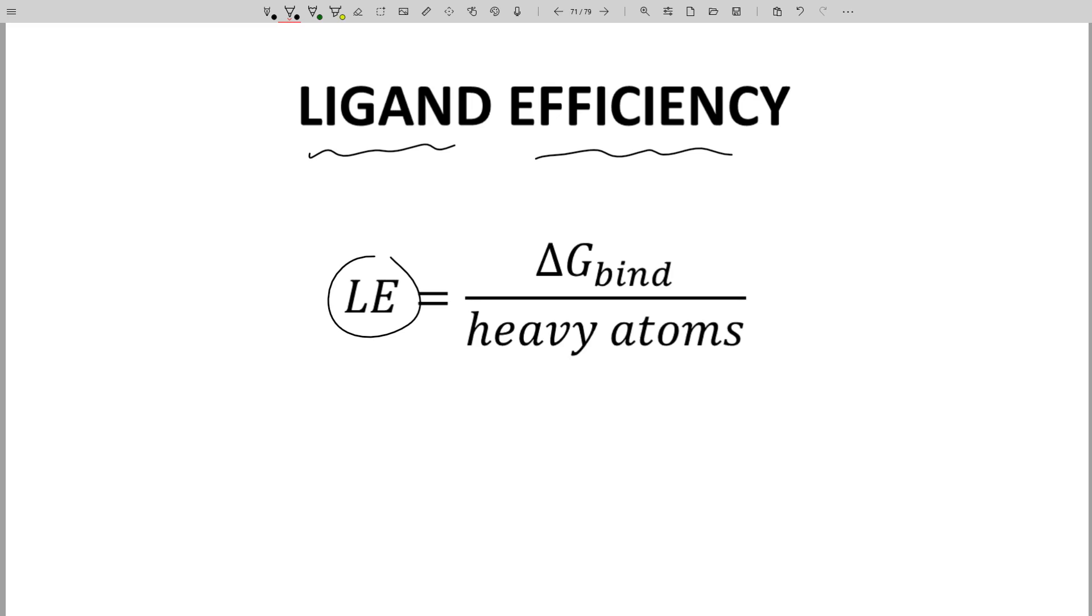The terms in the equation are binding energy. We know how to calculate binding energy from potency. Delta G equals minus 2.3 RT log of 1 over Kd or 1 over Ki. The denominator has a term heavy atoms.